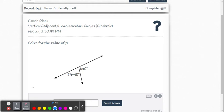In this video, we're going to look at a few examples within the Delta Math online system for the problem set vertical, adjacent, complementary angles, algebraic. And for my students, I'm going to want you to write an algebraic equation based on the relationship.